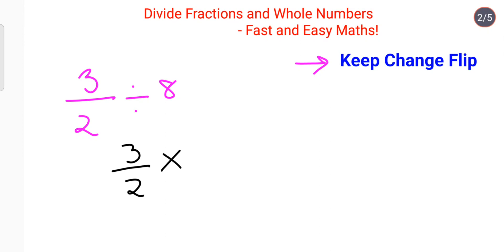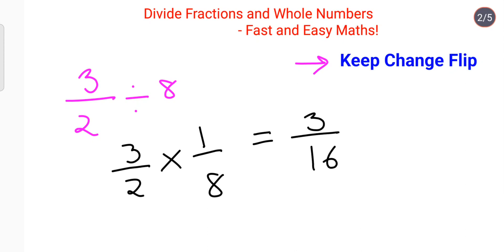This division sign changes to multiplication, and 8 gets flipped to 1 upon 8. Whenever you have a multiplication sign between two fractions, the operation becomes very easy. Multiply the numerators: 3 into 1 is 3. Multiply the denominators: 2 into 8 is 16. So the answer is 3 upon 16.